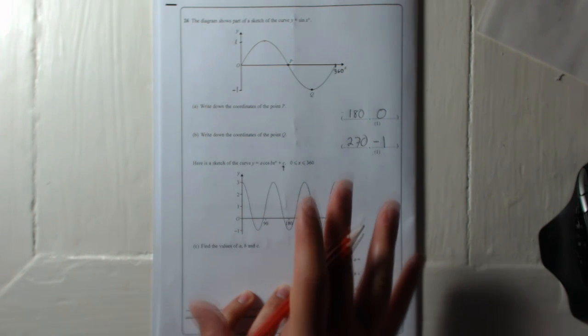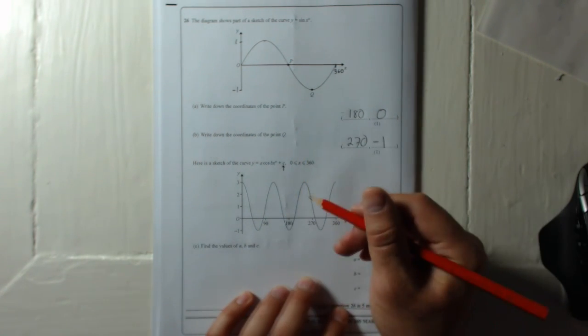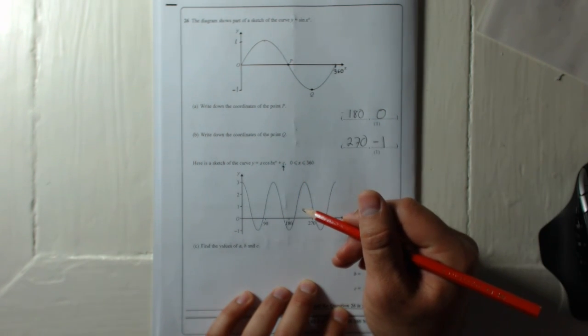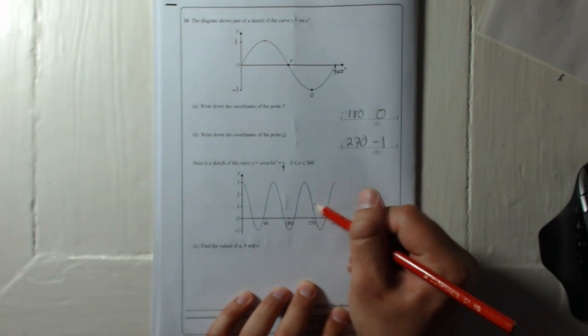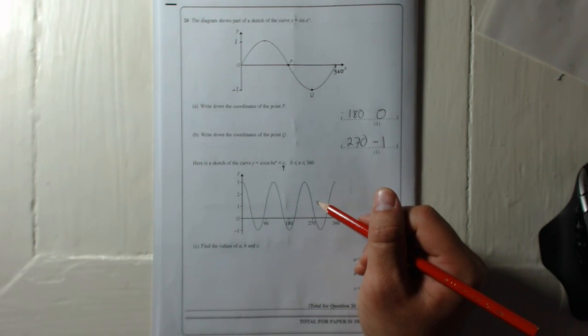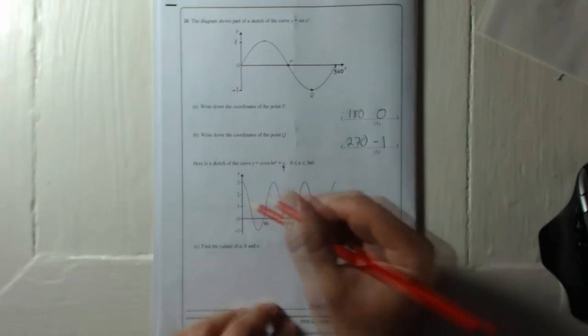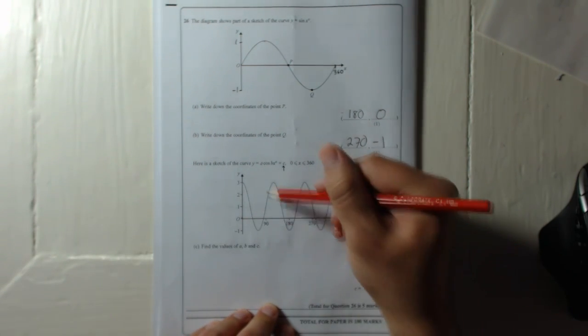So if we know that usually it's meant to start at 1 and go down to minus 1 and back up to 1, well, the middle of the graph would be at 0. You can see here the middle of this graph—the middle of it is at 1.